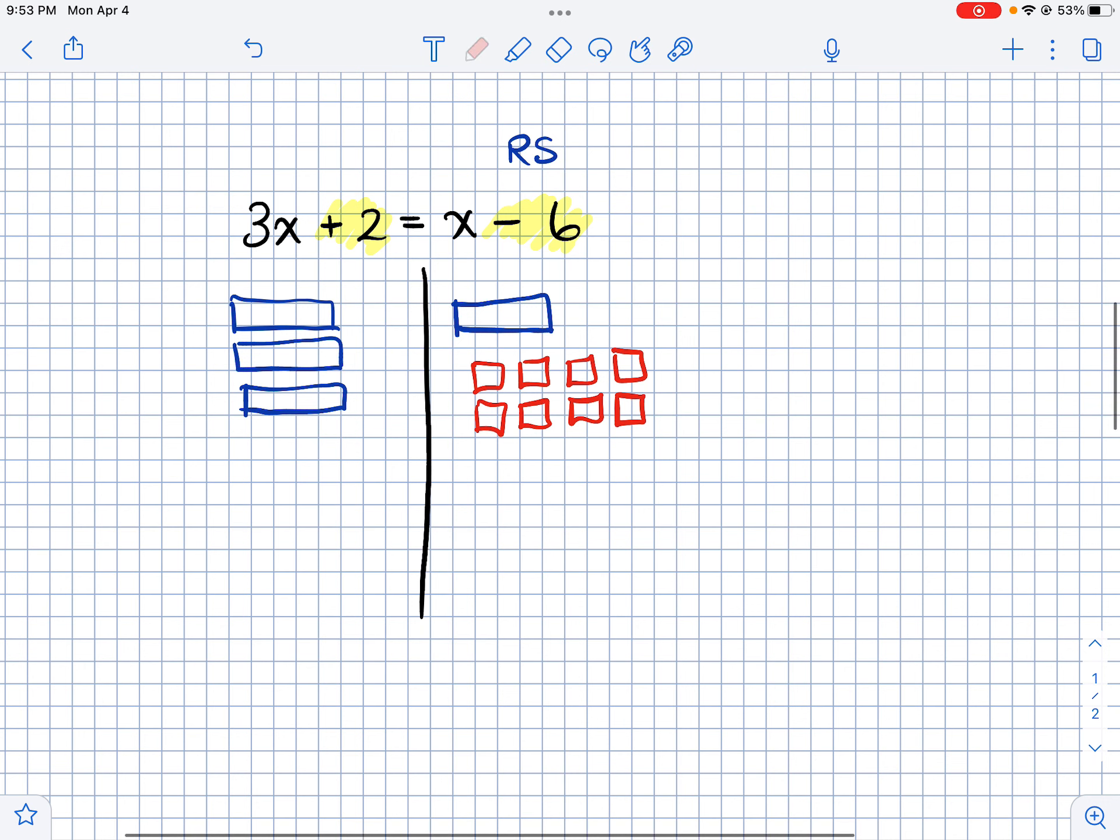So now I want all my x's to be on one side. So I'm going to get all my x's on the left side. So I need to get rid of the x on the right side. So to do that I'm going to pair it up with a negative x so that they will get eliminated. But whatever I do to one side I have to do it to the other side. So I'm going to add a negative x tile over there. So now I can eliminate these two things because they form a zero pair.